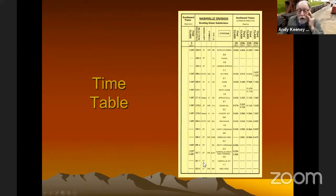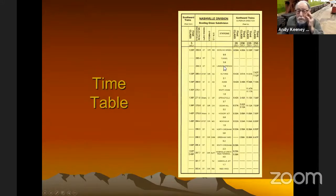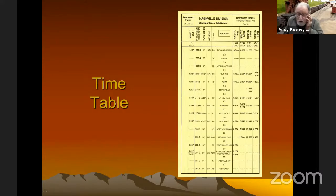This is just half the railroad — the other half's on the other side. The symbols: O is for operator, and R is a register station — I can cover the register station in a bit. The station ID is a two-letter identifier, and then the station and the distance between each of these stations all the way down. If anybody's got any questions, feel free to jump in and ask as we're talking about it.